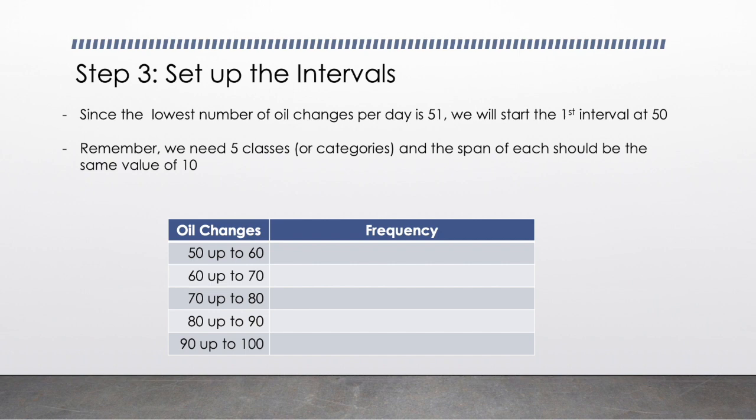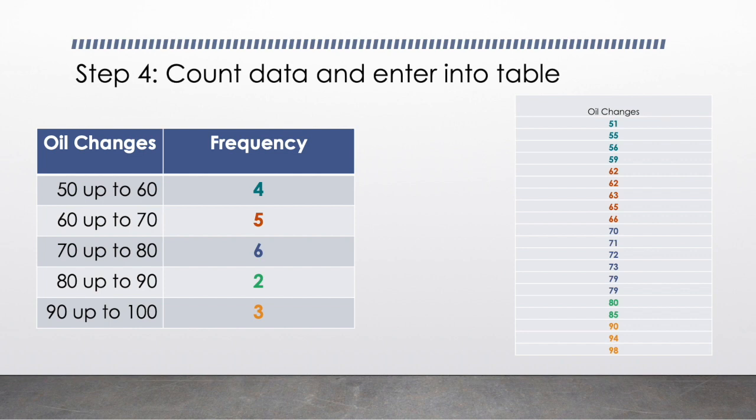Now let's take a look at our data. So here's the number of oil changes completed on those 20 days and I have them sorted by increasing values from that lowest of 51 up to the highest value of 98 oil changes in a day. And so I just count. How many fall between class one, 50 to 60? One, two, three, four, so our frequency is four. 60 to 70: one, two, three, four, five. The next is six, and then two, and then three. You can take some time to pause here if you want and count those up for yourself.